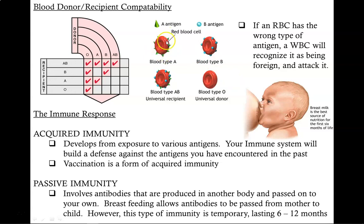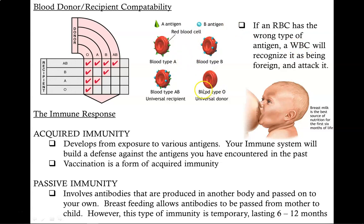Red blood cells have a protein on their surface called an antigen. There are two major types of antigens, A and B. Depending on which antigen your blood cells have determines what blood type you have. This is the reason you can't just donate your blood to anyone. If a red blood cell has the wrong type of antigen, a white blood cell will recognize it as being foreign and attack it. These antigens almost act like a passport, telling the white blood cells who belongs and who doesn't. If your blood type has no antigens, you can donate your blood to anybody, but you can only receive blood from others with the same blood type, O.